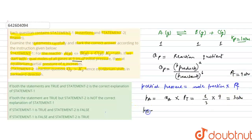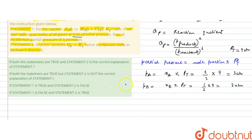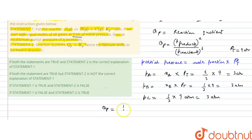Similarly, the partial pressure of gas B is its mole fraction — number of moles of B upon total number of moles — multiplied by total pressure, which is also 3 atmosphere. And the partial pressure of C is likewise its mole fraction of 1/3 multiplied by total pressure of 9 atmosphere, giving 3 atmosphere. Now we calculate the reaction quotient: Qp equals partial pressure of B multiplied by partial pressure of C, divided by partial pressure of A.